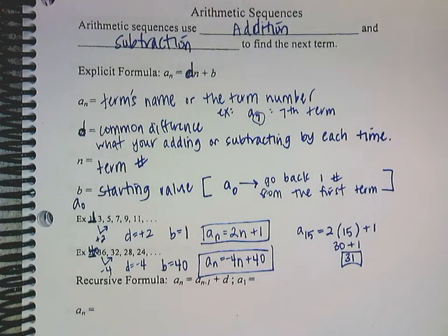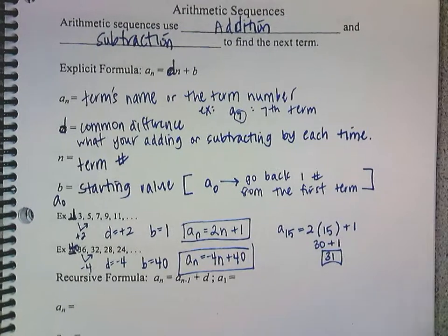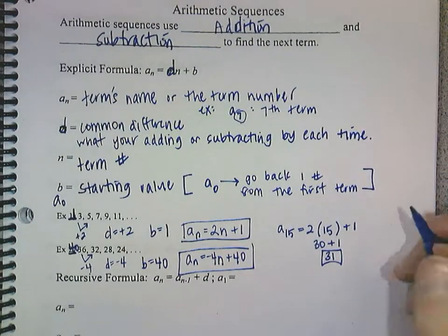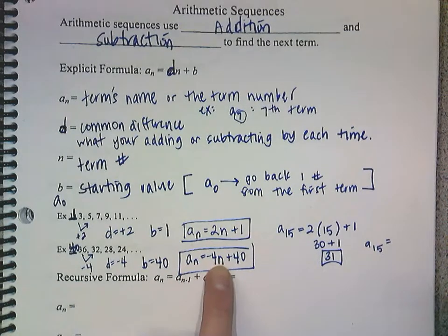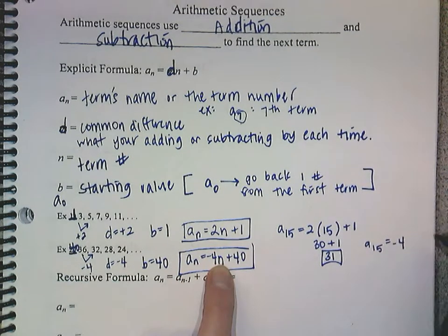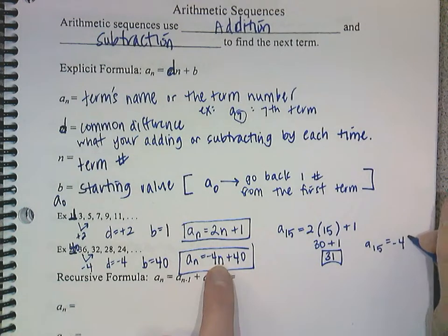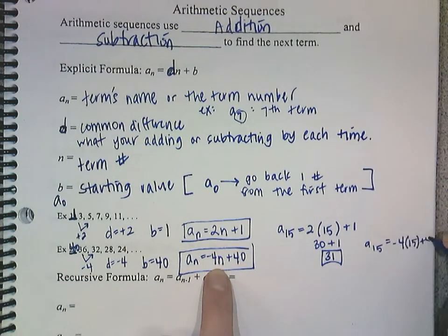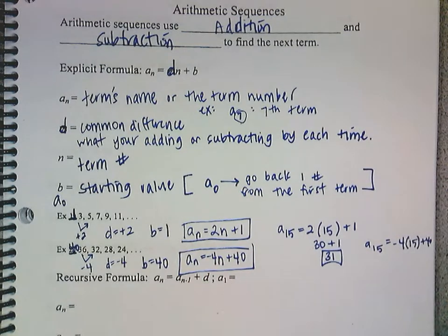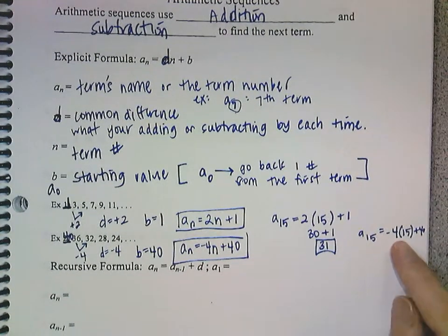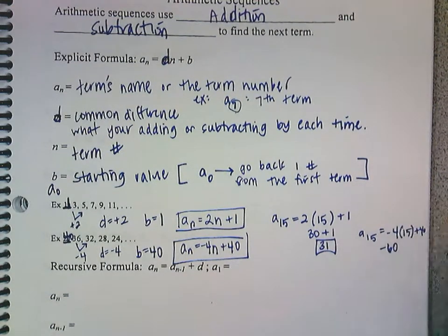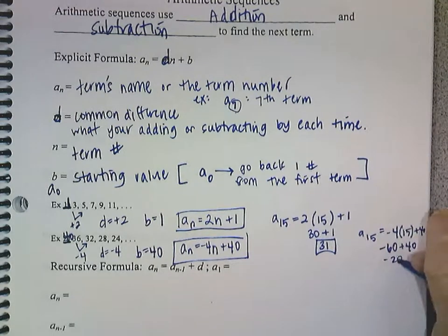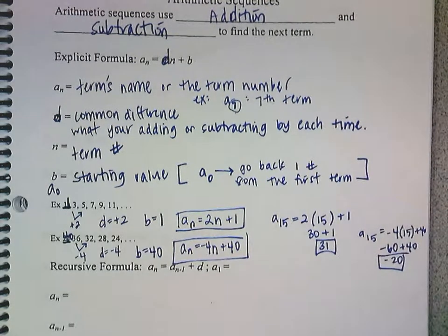Now, I also want to figure out my 15th term for this guy, because that's what we do a lot of. So I'm going to write it over here. Okay? So I'm going to do a sub 15 equals, and again, I'm going to take out my n and replace it with 15. So I need to do that on the other side as well. So negative 4 times 15 plus 40. Alright, so then I have negative 4 times 15, which is negative 60. And then I'm going to add 40 to that, which gives me negative 20. So a sub 15 is negative 20.